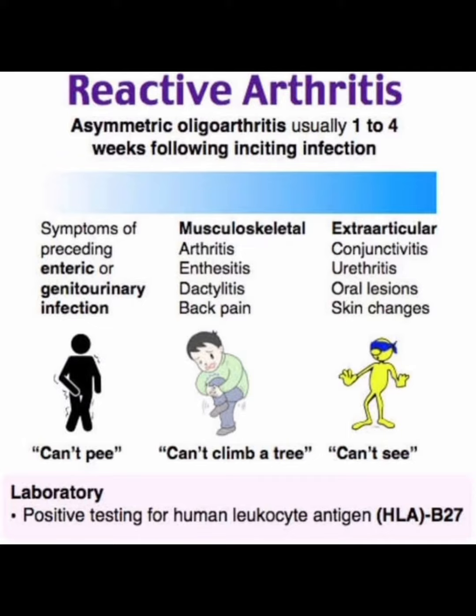What are the symptoms and features of Reactive Arthritis? Symptoms include preceding enteric or genitourinary infections. Musculoskeletal problems are arthritis, enthesitis, dactylitis, and back pain. Extra-articular features are conjunctivitis, urethritis, oral lesions, and skin changes.